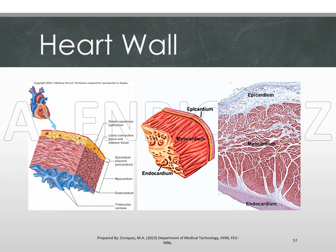This slide shows the microscopic anatomy of the heart wall. The epicardium — also called the visceral pericardium — is the outermost layer, composed of connective tissues, adipose tissues, and a simple squamous epithelium on the outside. In the middle is the myocardium, where cardiac muscle fibers are located. The innermost layer is the endocardium, which has a smooth inner surface.